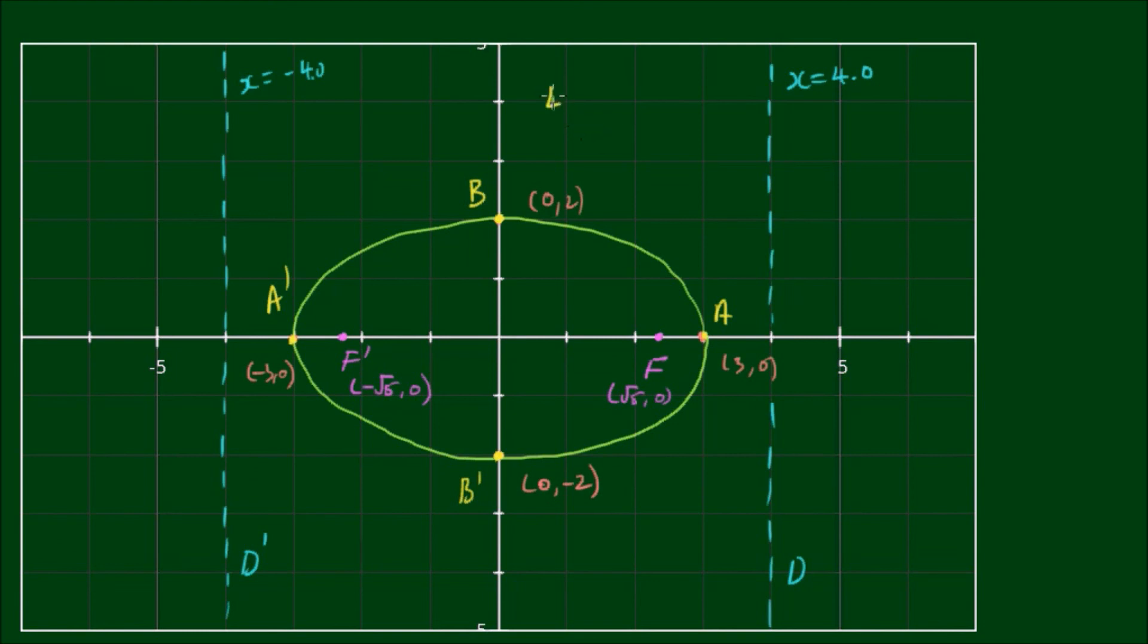So there we have a sketch of the ellipse 4x² plus 9y² equals 36, showing the vertices, foci and the directrices. Let's leave it here for this example video. We'll do a more complex example in the next one.